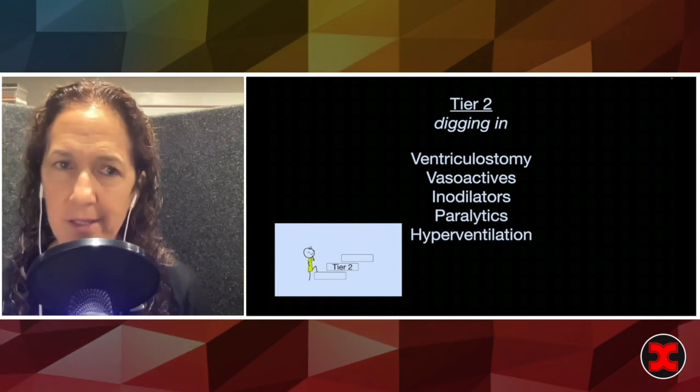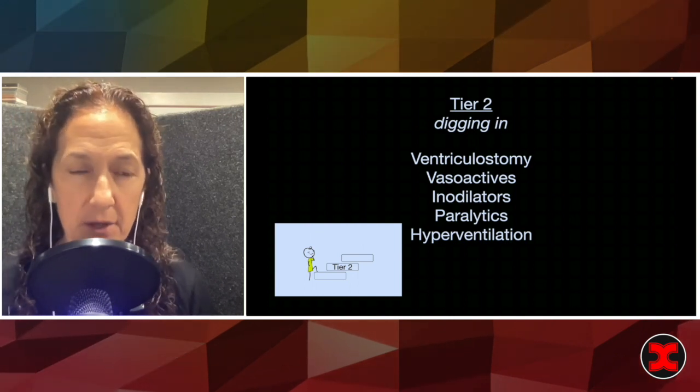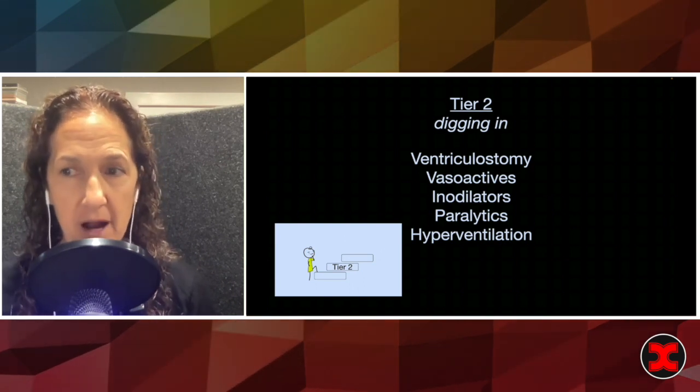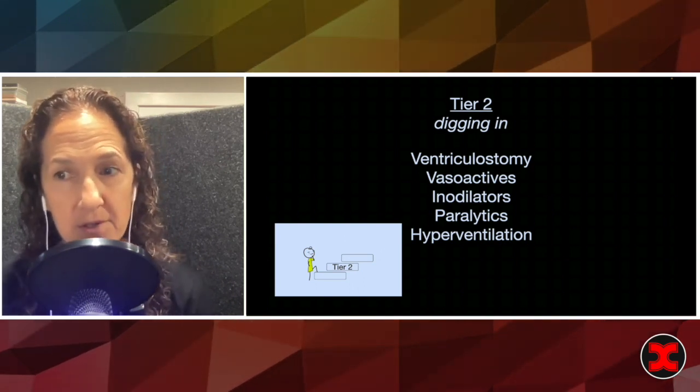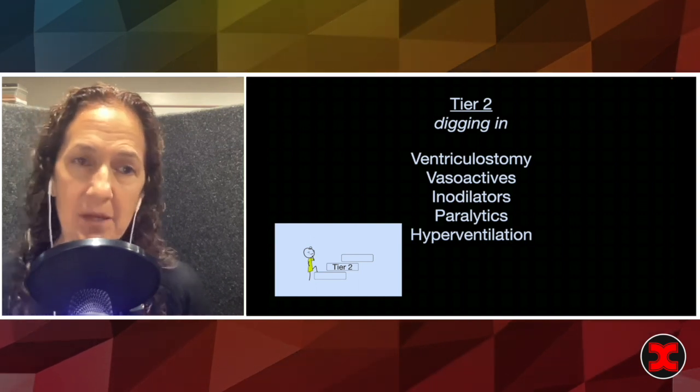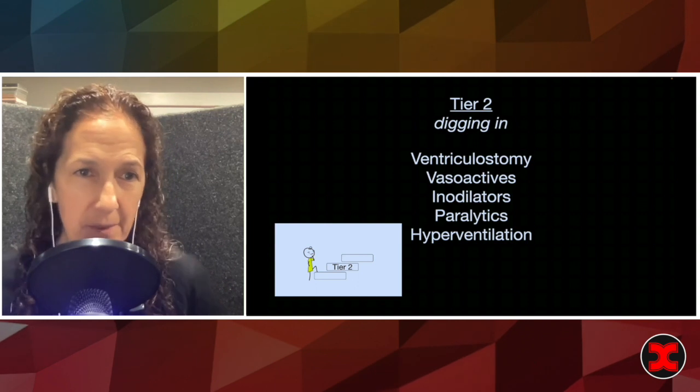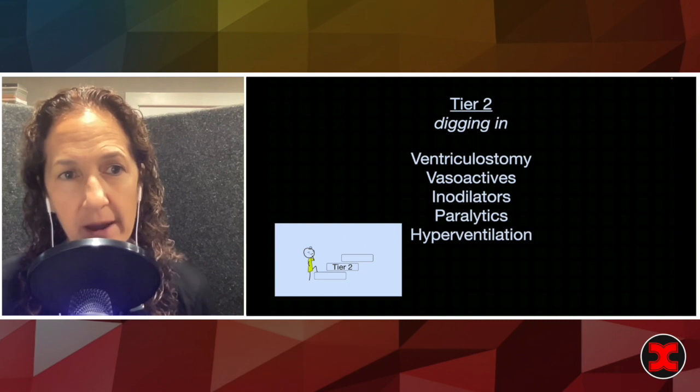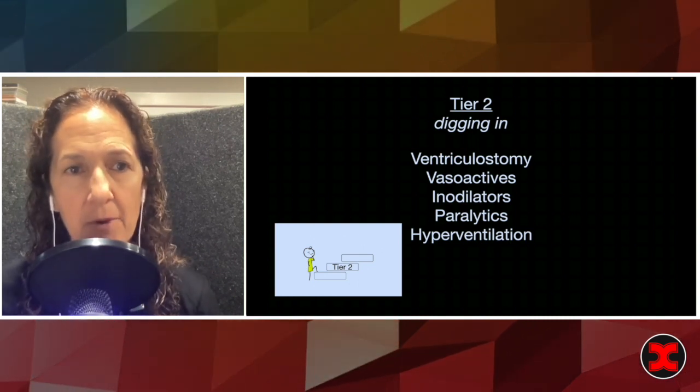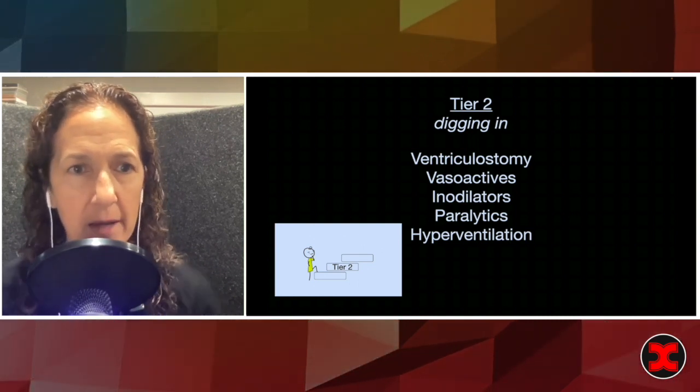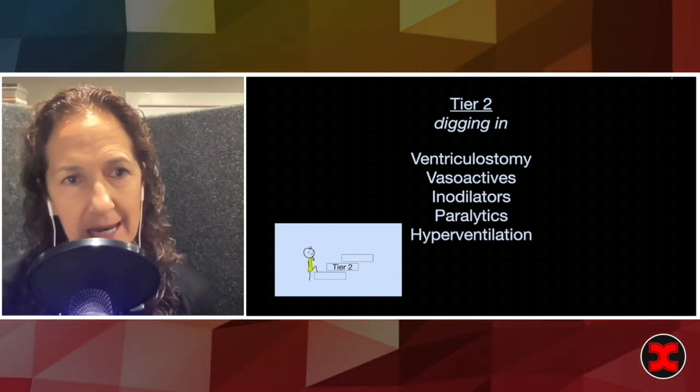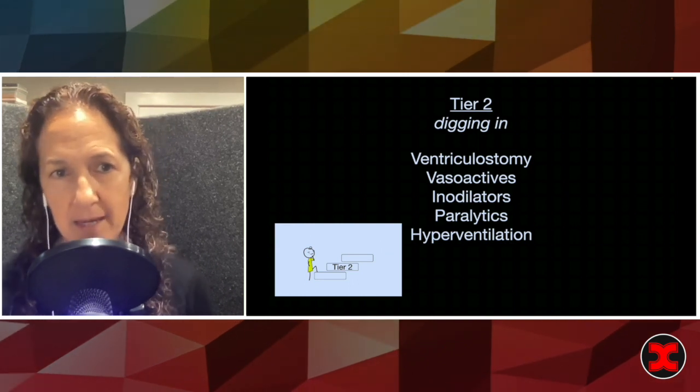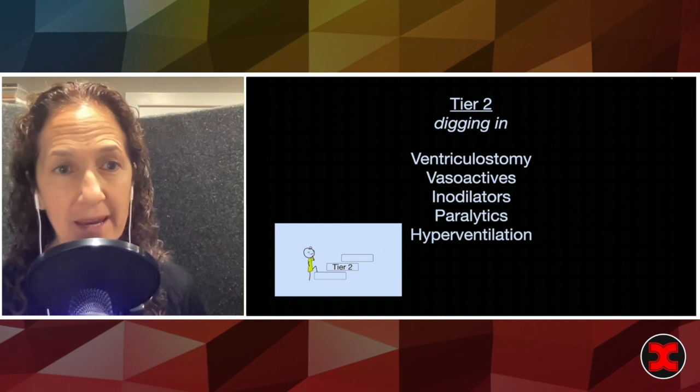So thinking about a ventriculostomy, vasoactive agents are sometimes really helpful. They're on the table if you have numbers and ICP goals. And for TBI, ICP goal is now less than 22, and we typically run that way with subarachnoid hemorrhage as well. But with vasoactives, if my ICP is rising, I want my MAP to rise. So I may even put on a phenylephrine drip to increase my mean arterial pressure to match that ICP so that I'm maintaining cerebral perfusion pressure. It's all in the mechanics of it.